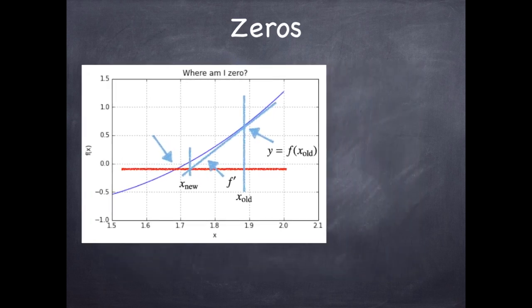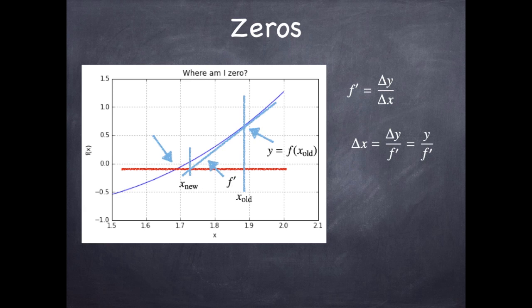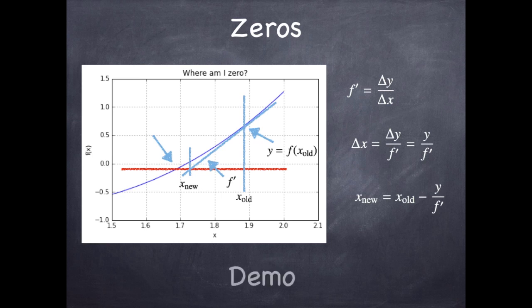If the function is reasonably well behaved in the neighborhood of the zero and you're not too far away, this approach is extremely efficient. Let's see mathematically how that works. We evaluate the derivative at x_old — that's delta y over delta x. We can solve for delta x, but the delta x we're interested in is the one that gives y equal to zero. So delta y is the whole value of y. You take y at x_old, divide by the slope — that's the change in x you subtract from x_old to get x_new. You just repeat that over and over again.